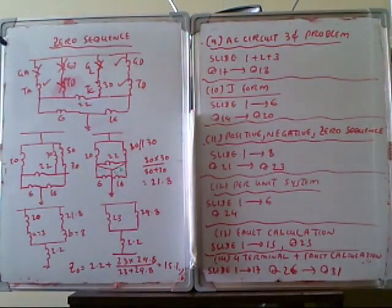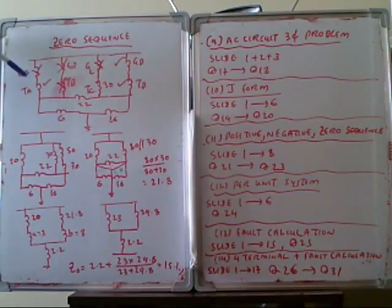Okay, so we draw a zero-sequence diagram here. Generator A is transformer A. Generator A has no connection to the ground, so remove. Transformer A is connected to the ground, so this is included.